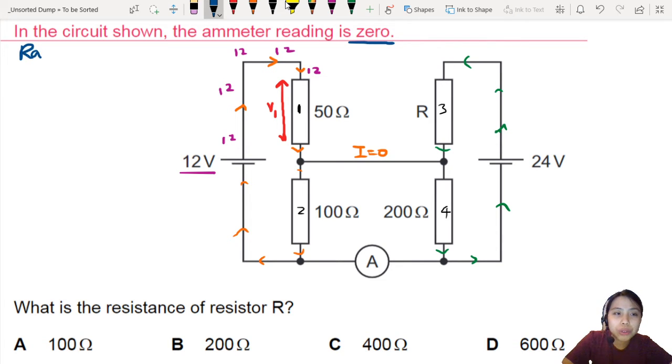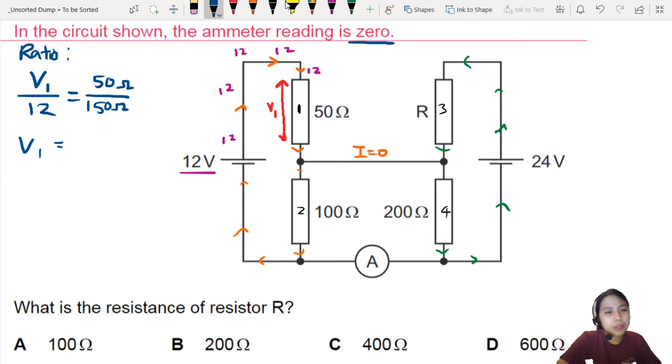So I'm going to use some ratios to help us out. The ratio is our best friend. The potential drop across resistor 1 over the total potential drop, which is 12, I know that because of the battery. It's the same ratio as that resistor 1's resistance, 50 ohms, over the total resistance in that particular loop. So 150 ohms. We're treating this as one loop because current is not crossing the bridge and we don't want to go to the other side.